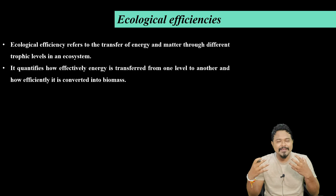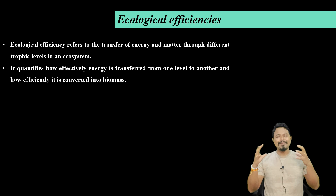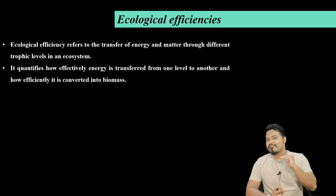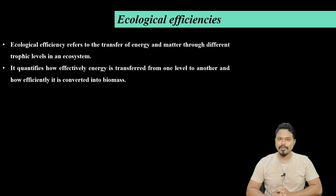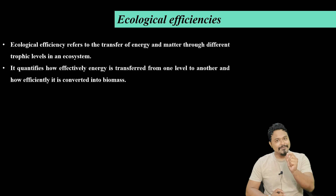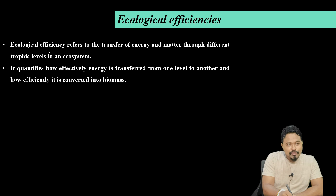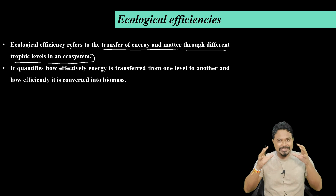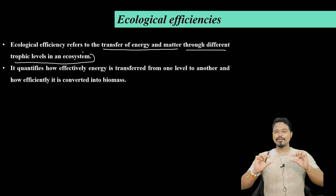What is Ecological Efficiency? If we have a lot of ecosystems, how do we work efficiently? This is the Ecological Efficiency concept. Ecological Efficiency refers to the transfer of energy and matter through different trophic levels in an ecosystem. It is very important to know about the trophic level.